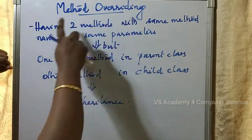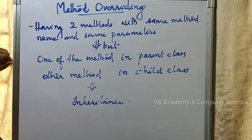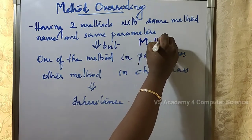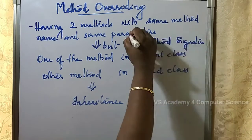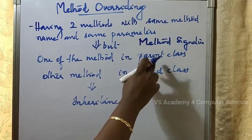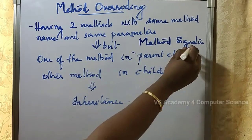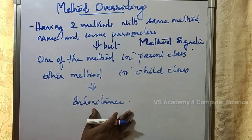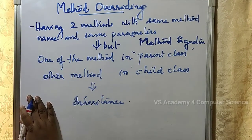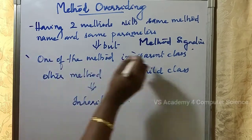Next is method overriding. Method overriding means having two methods with the same name and same parameters — that is, the same method signature. The condition is that one of the methods should be in the parent class and the other in the child class, so inheritance must be used. Method overloading does not require inheritance, but method overriding does.